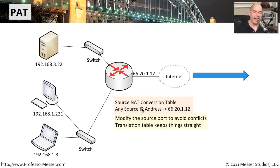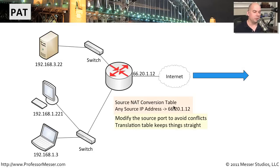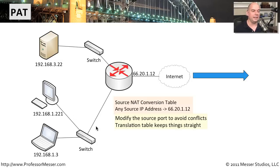It keeps all of this in a NAT conversion table — it writes and keeps track of all of it. That's because when the message gets out to Google it's going to come back, and when that message comes back it returns to 66.20.1.12 on a particular port number. The original port number is looked up in the conversion table, and the router or firewall determines who sent that — for example, 192.168.1.3 — and modifies the IP address so it can send that message to the right internal recipient.